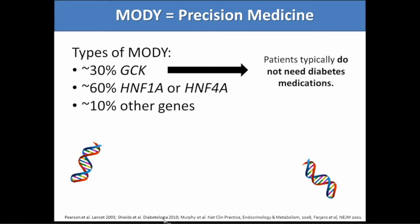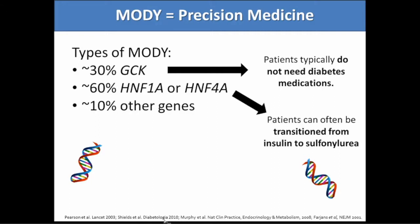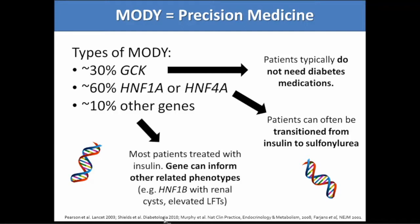For HNF1-alpha and HNF4-alpha, these patients are often very sensitive to sulfonylureas, so they can be transitioned off insulin — if they were presumed to be type 1 or type 2 and put on insulin — to an oral agent, which is wonderful for the patient. For other types of MODY, there's not yet a particular gene informing a specific treatment, but knowing the gene can still be very helpful for understanding the clinical picture. For example, HNF1-beta MODY typically involves renal cysts and elevated liver function tests.